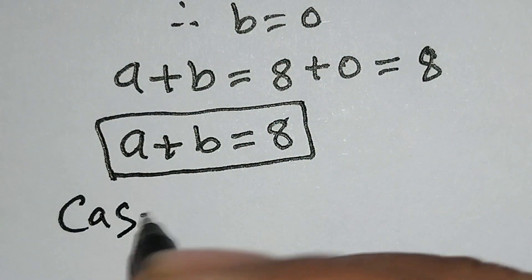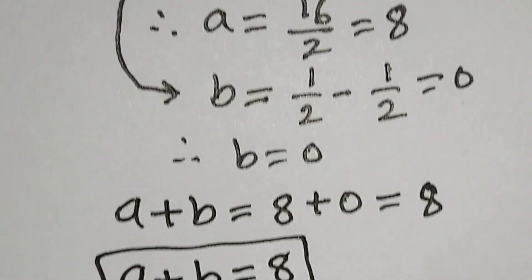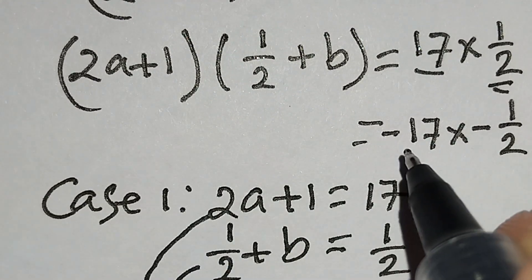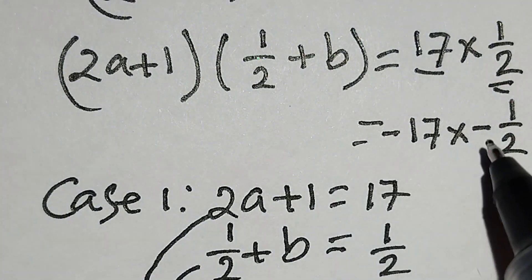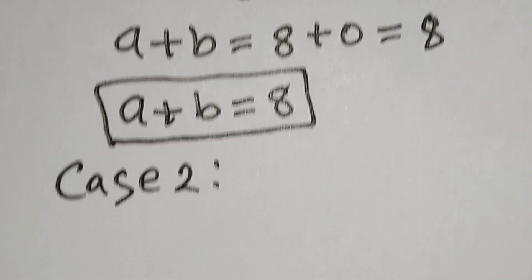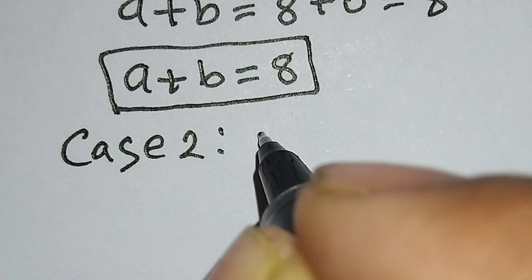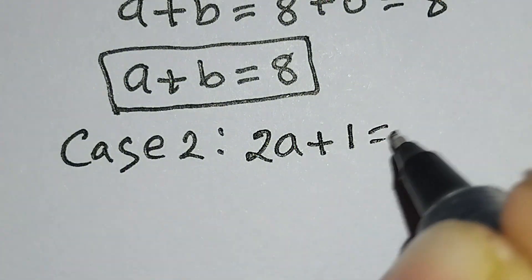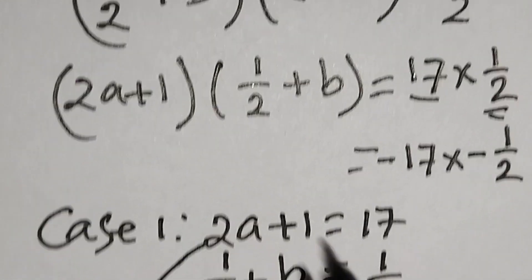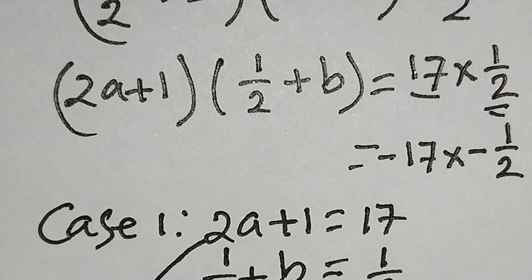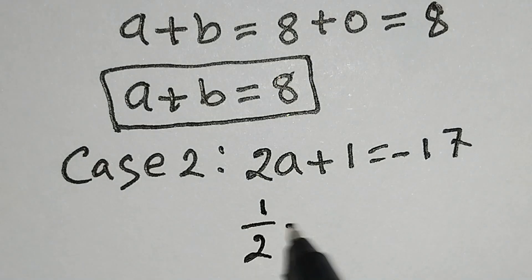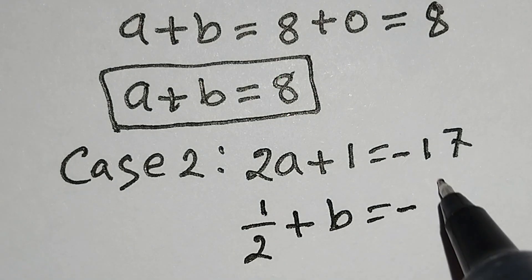Now Case 2. Here 2a + 1 = −17 and 1/2 + b = −1/2. So we can write 2a + 1 = −17 and 1/2 + b = −1/2.